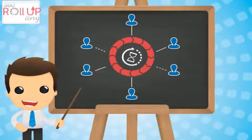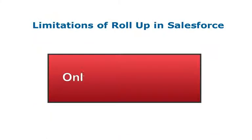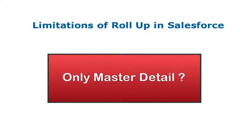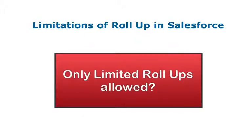Have you ever thought that Salesforce holds limitations when it comes to collecting data from multiple records altogether, often known as roll-up? Number 1, roll-up could be established for master-detail relationships, but not for look-ups. Number 2, only limited roll-ups are allowed. So, how do we overcome this problem?